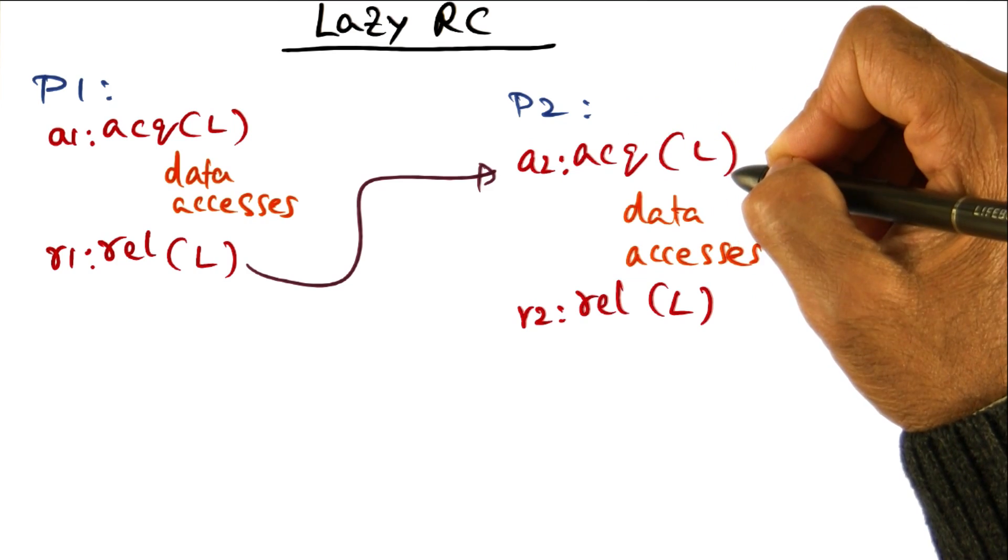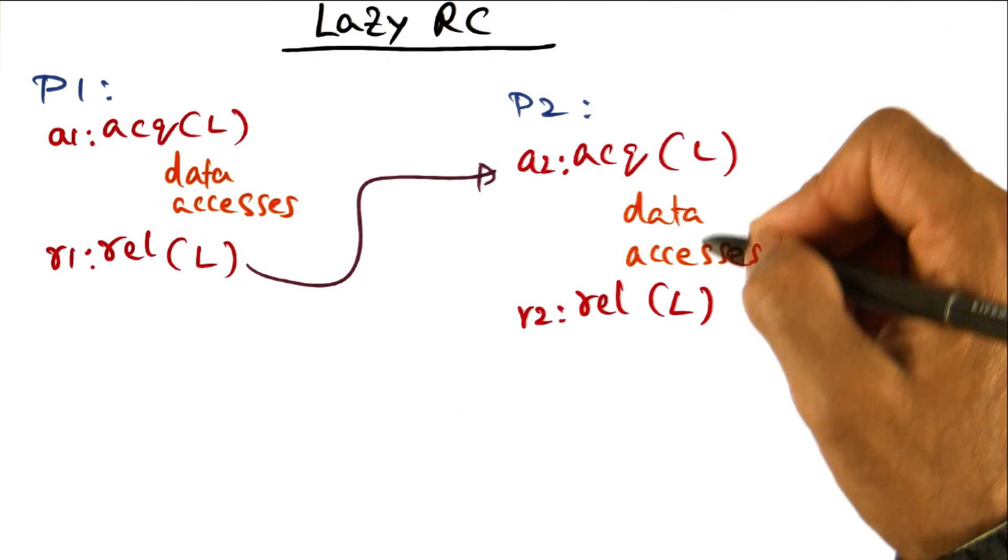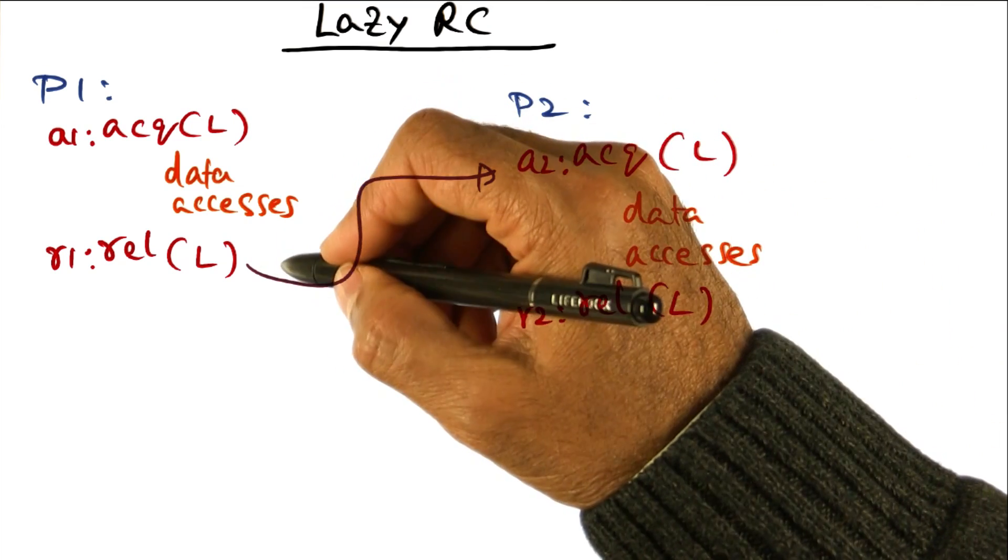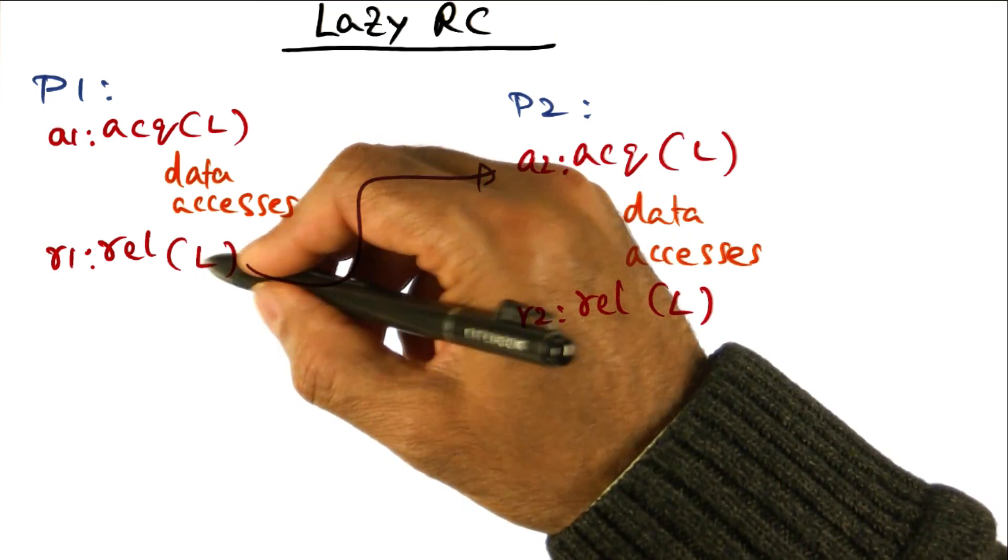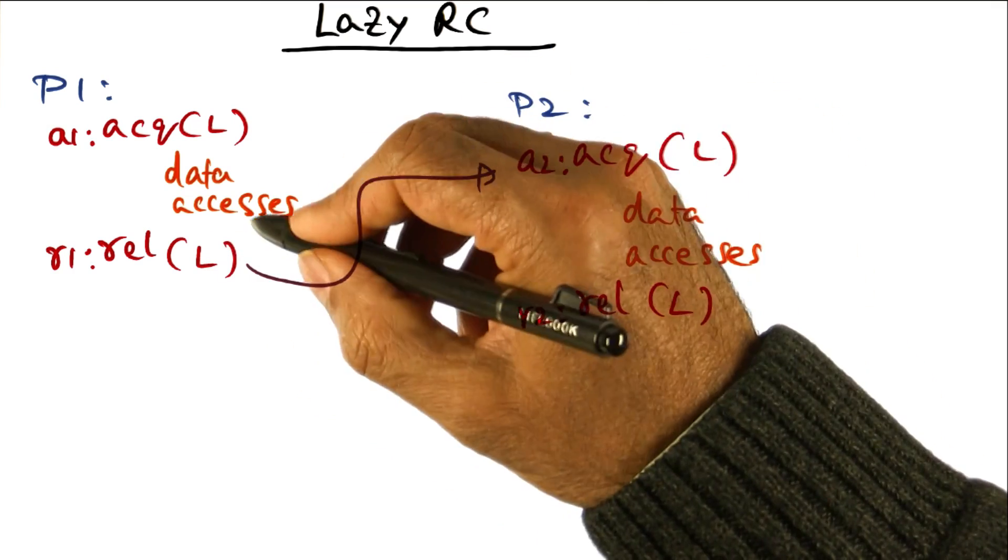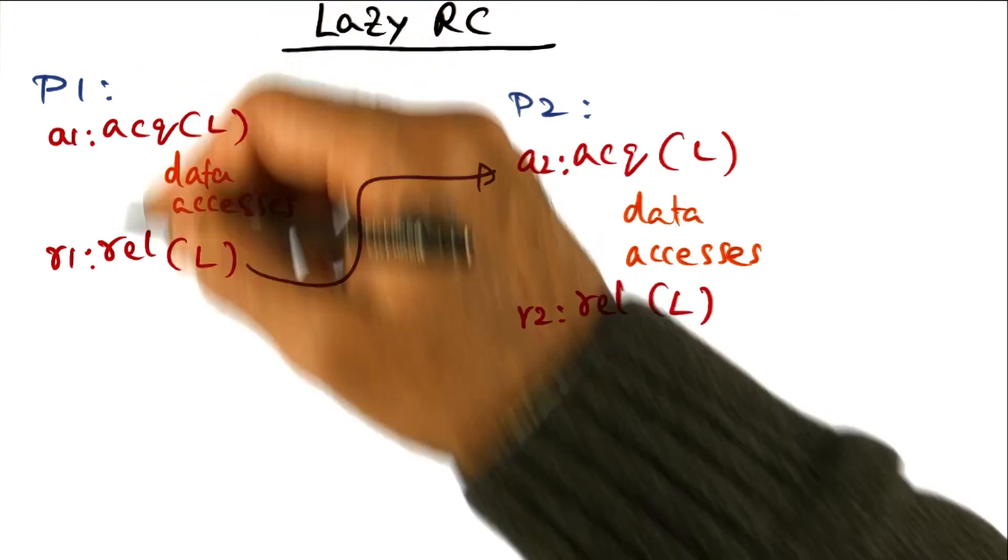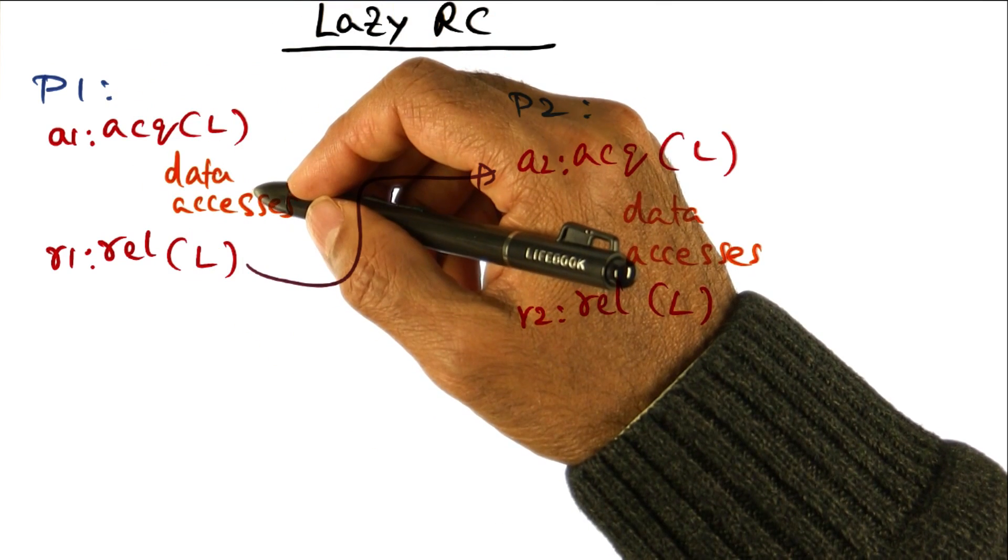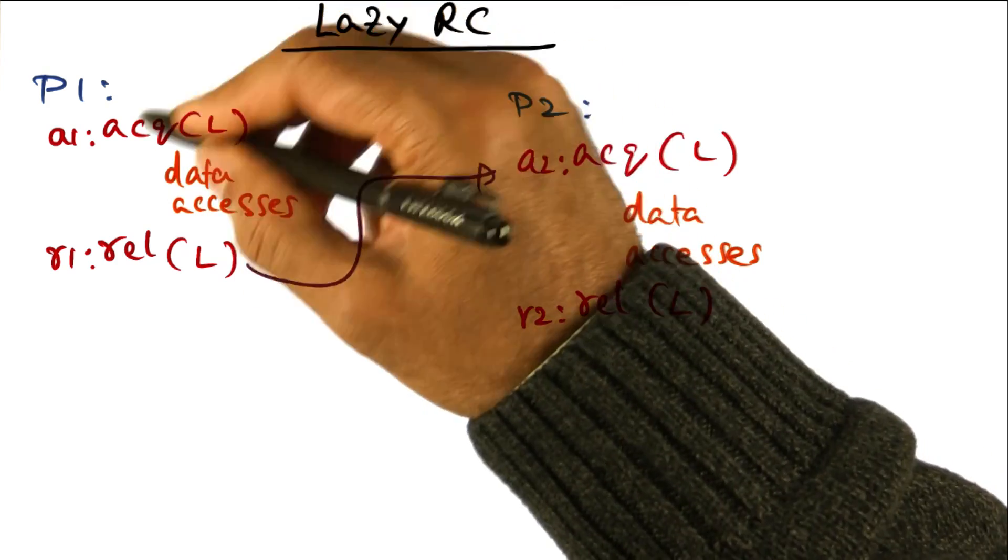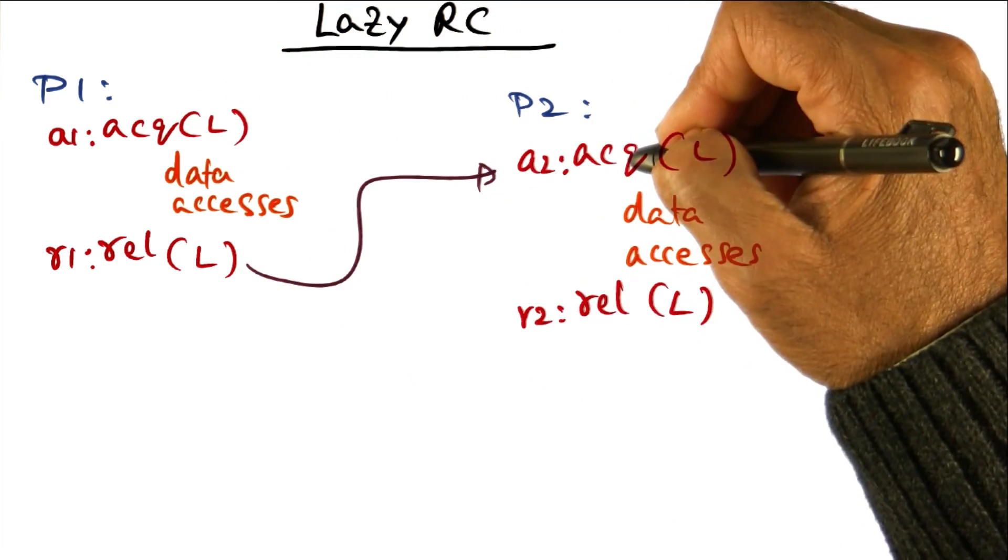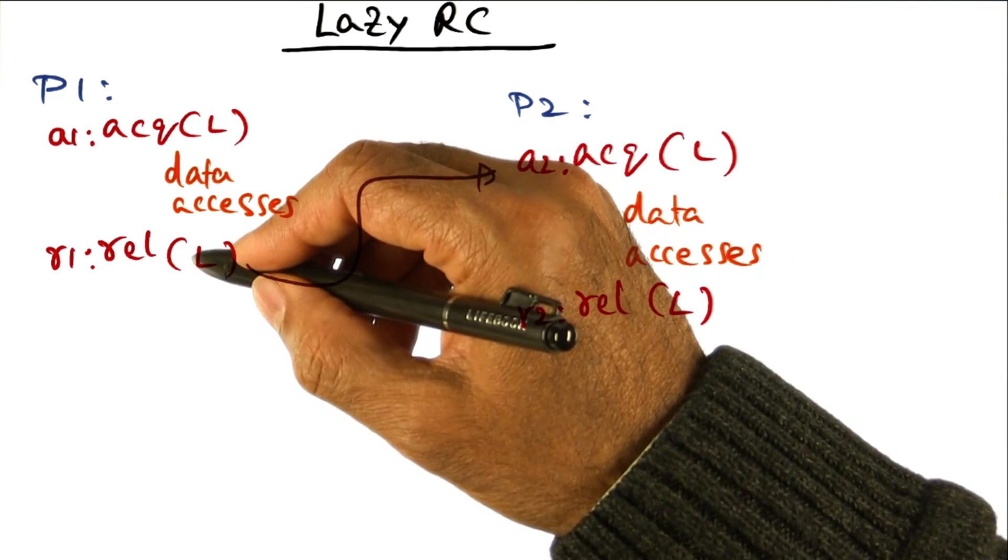Another thread may acquire the same lock, and if the critical section for P1 precedes the critical section for P2, then the RC memory model requires that at the point of release, you ensure that all the modifications that have been made on processor P1, that is the coherence actions that are commensurate with those data accesses, are all communicated to all the peer processes including P2, then you release the lock.